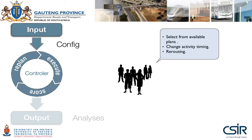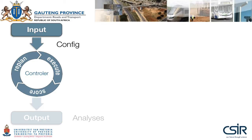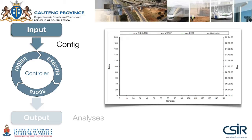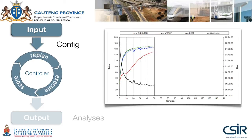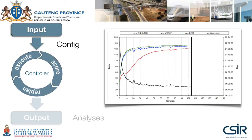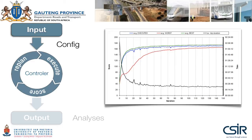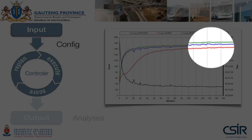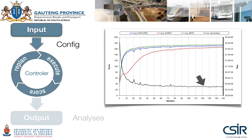Once each agent has selected a plan for the next iteration, the mobility simulation starts and the agents execute their plans. This process repeats iteratively until the agents cannot really improve their suite of plans by much. It is not equilibrium, but we call it a steady state. For each agent, we can take the best plan from their memory and average over the population to get the green line. If we average over the last executed plan for each agent, we get the blue line. The average over each agent's worst plan is the red line. You see how the utilities converge over time as the agents learn and adapt, and how the average trip duration improves and converges to a minimum.